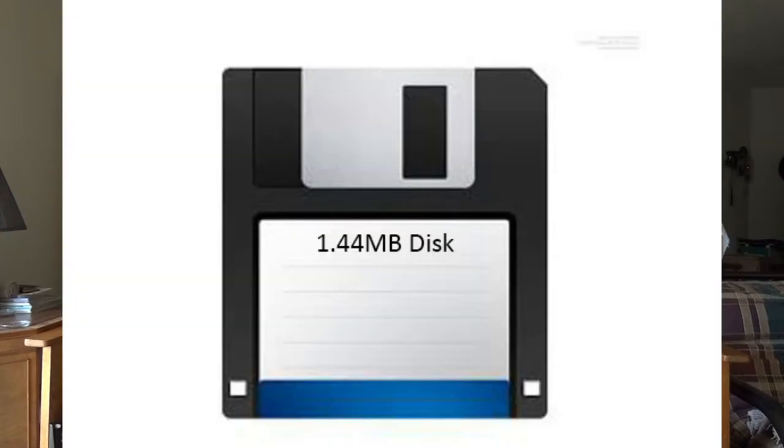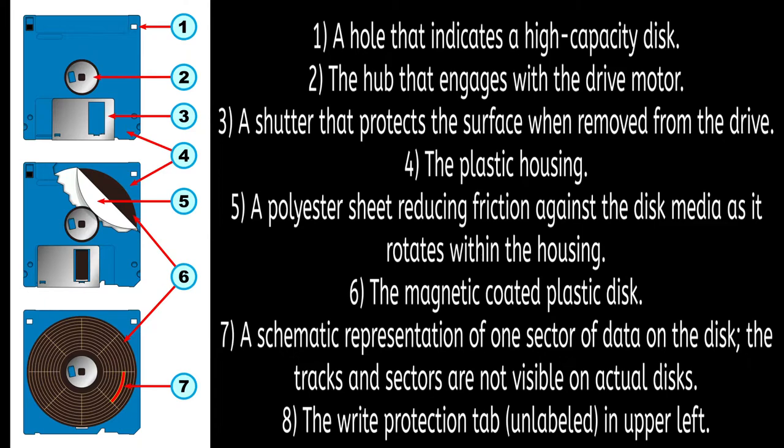In 1986, we got the 1.44-megabyte 3½-inch floppy disk. It shouldn't come as a surprise that this would be the standard of storage until the invention of the CD-ROM. This diagram shows off the individual parts that make up the 3½-inch floppy disk.